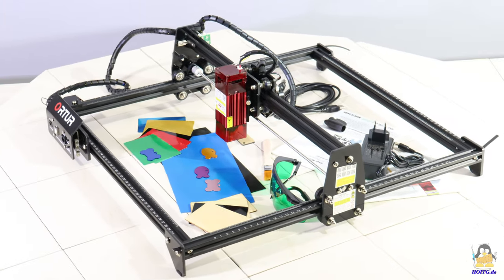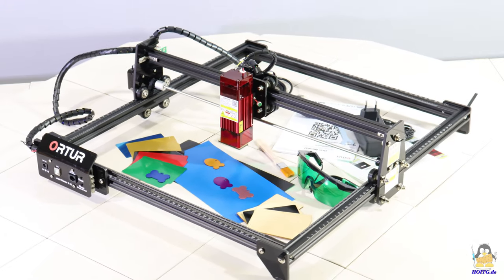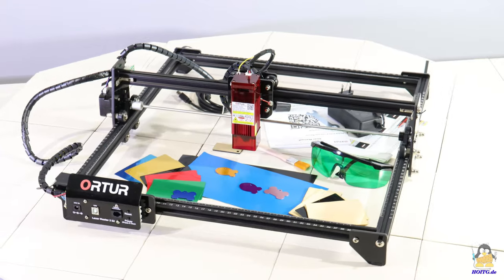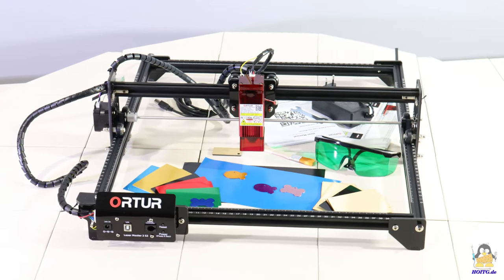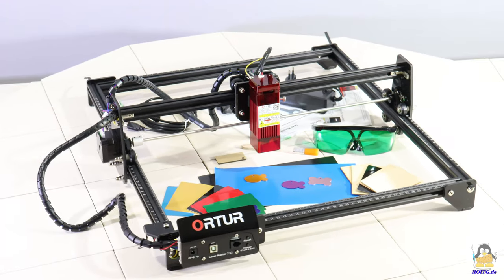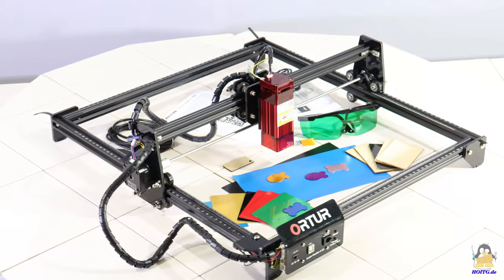The firmware of the Lasermaster 22S is based on Grbl and in contrast to some competitors, ORTUR follows the rules of the license to publish the modified source code. This is totally in the spirit of how open is this gadget. The link to the repository can be found directly on the manufacturer's website.